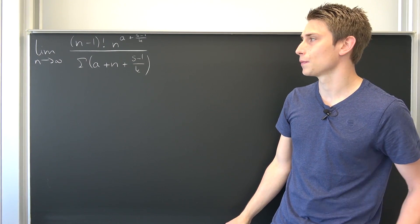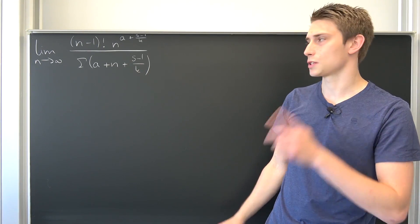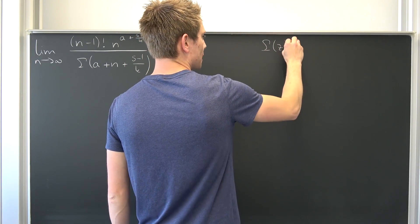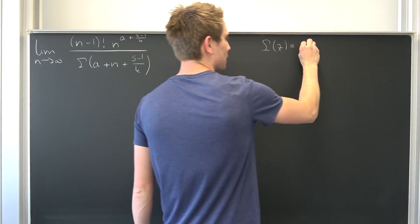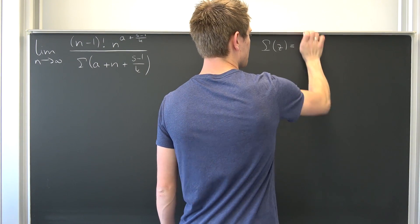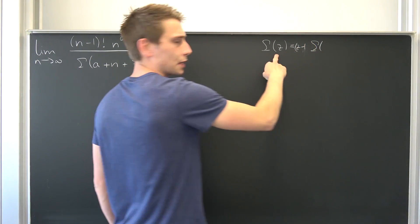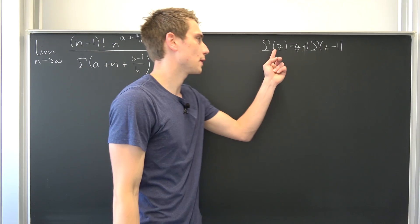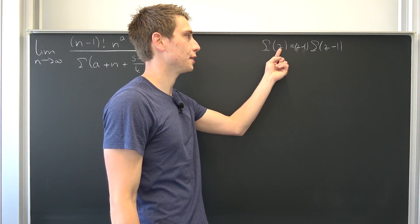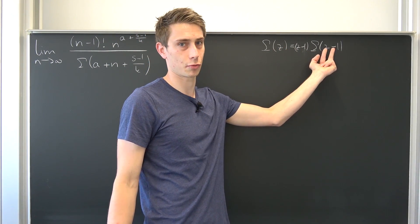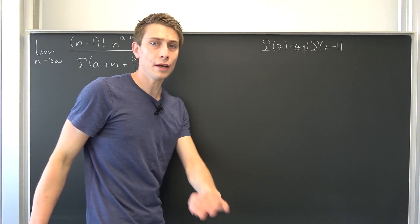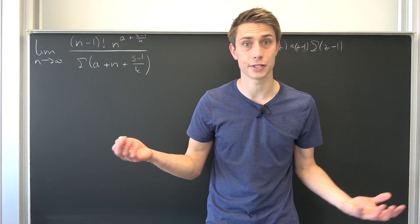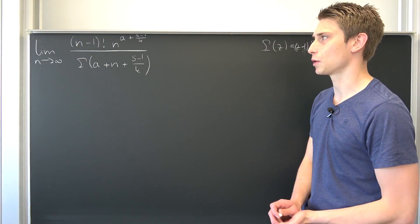First I want you to consider the recurrence relation of our gamma function. If we have gamma of z, this is nothing but z times gamma of z minus 1 — I'm terribly sorry, that's z minus 1 factorial times gamma of z minus 1. So what we can do is reduce the argument by 1, put this argument to the front, and write the gamma function with this new argument. This is something we have learned about before; you can prove this using the various definitions of the gamma function derived in previous videos.